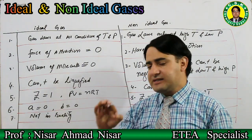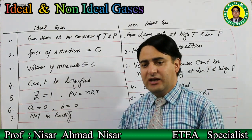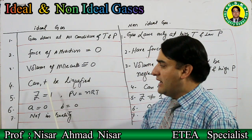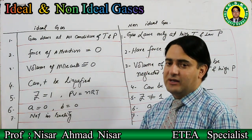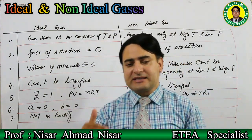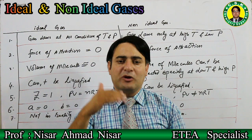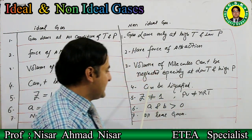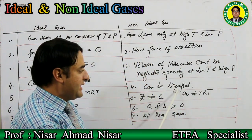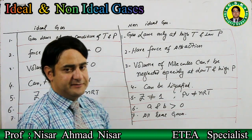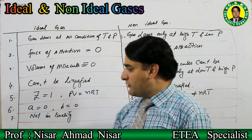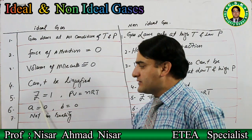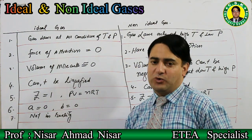Another difference: an ideal gas cannot be liquefied. Ideal gas cannot be liquefied. Whereas real gases or non-ideal gases can be liquefied easily — they can be liquefied. Next: for an ideal gas, the value of Z is 1.